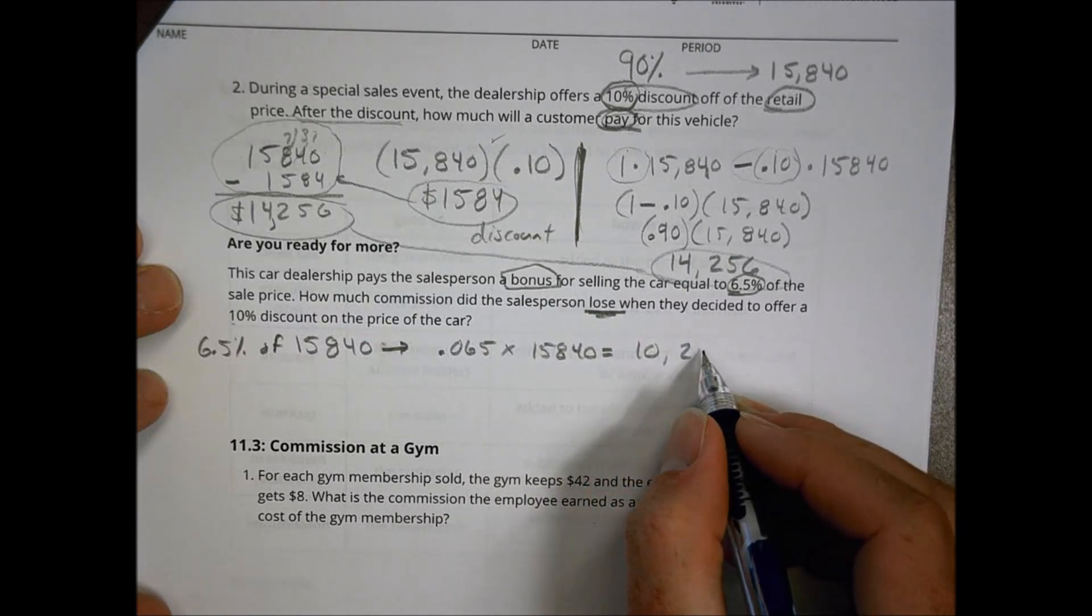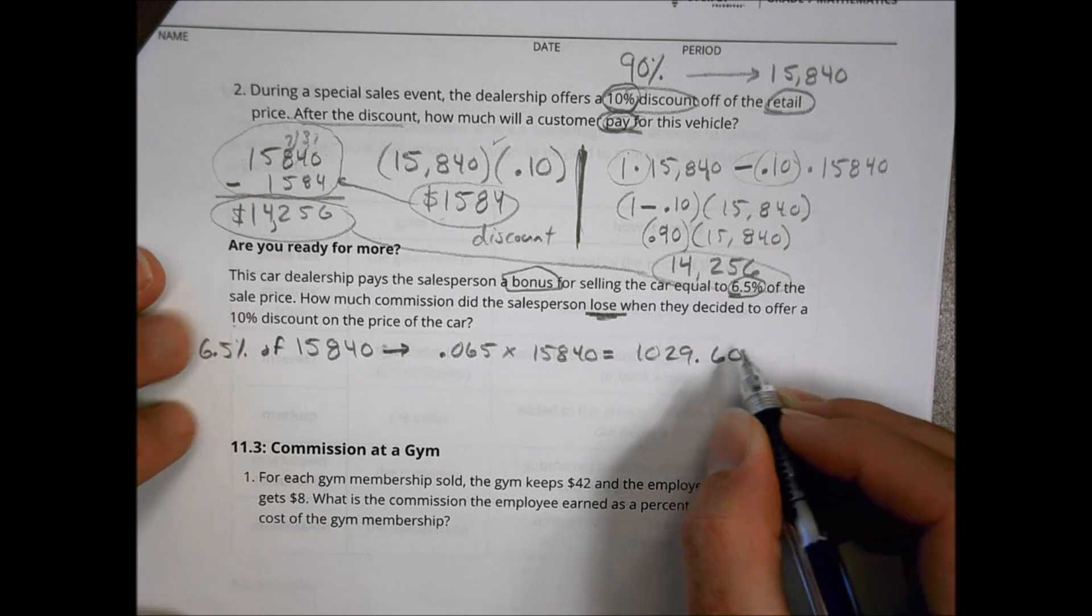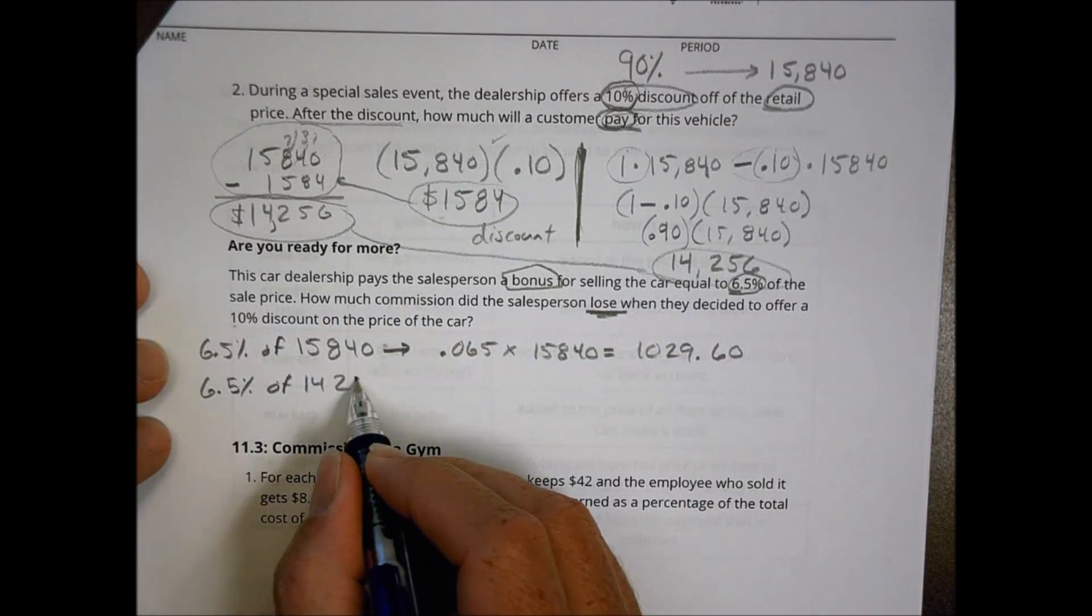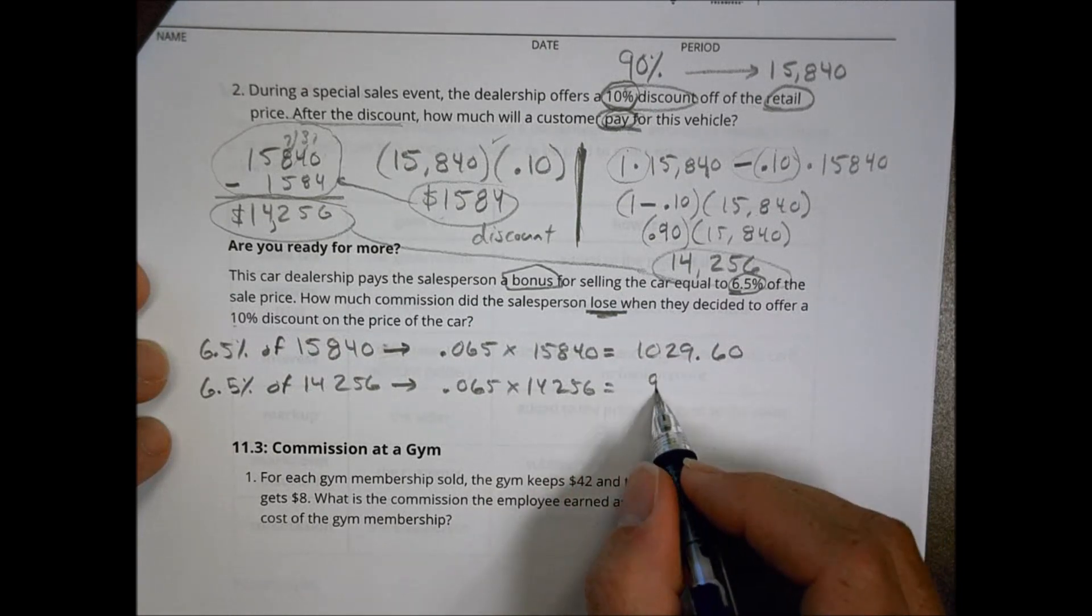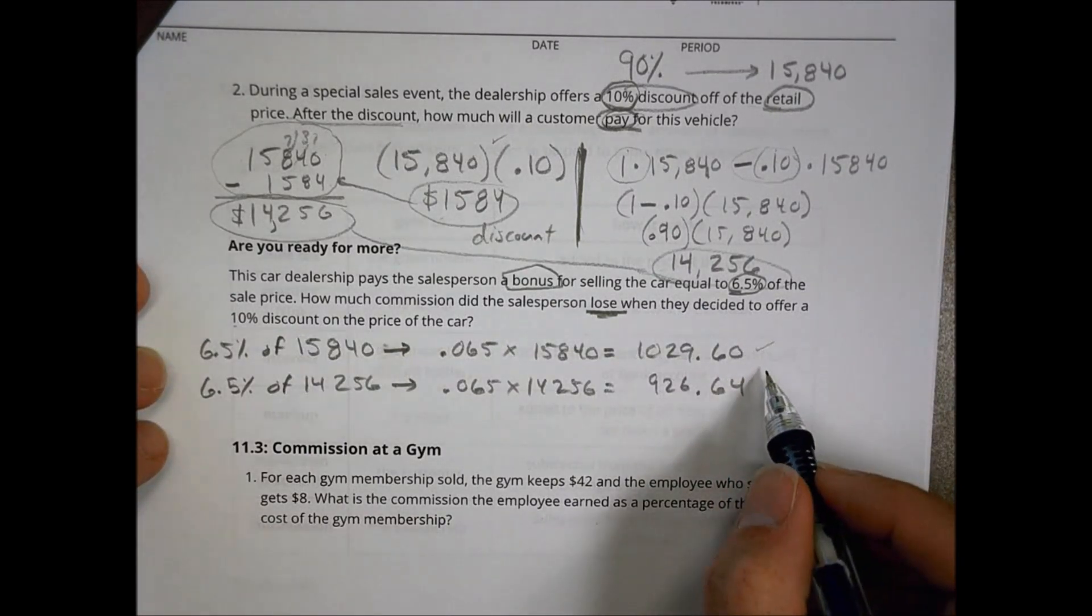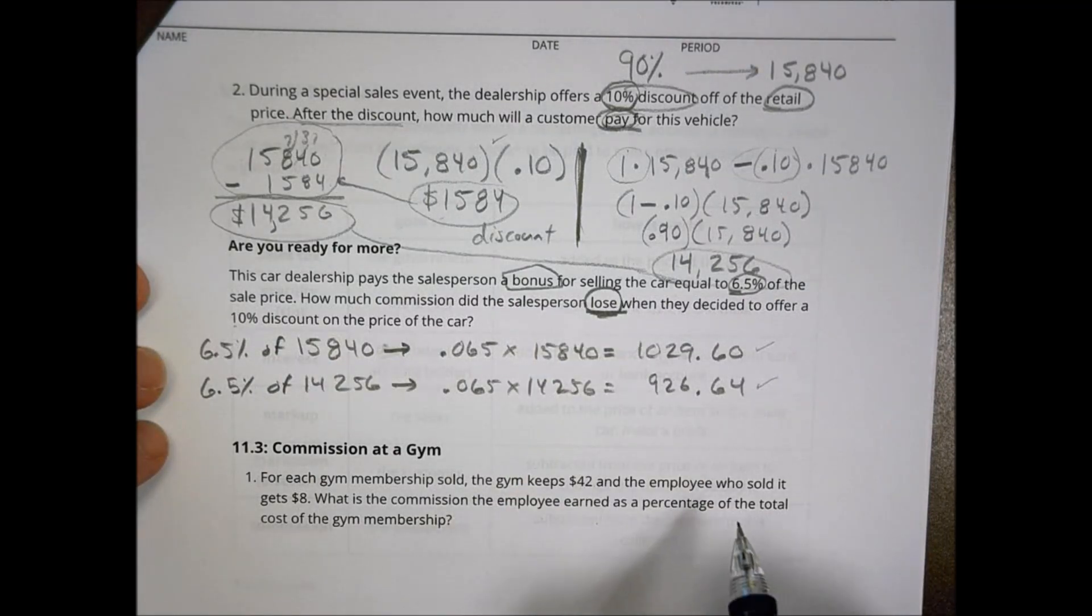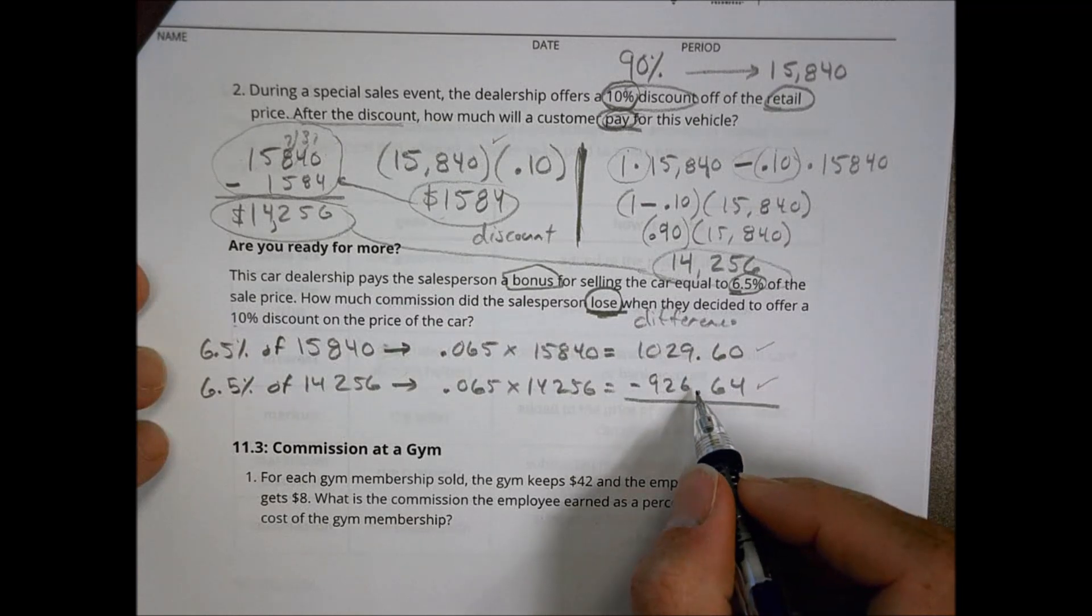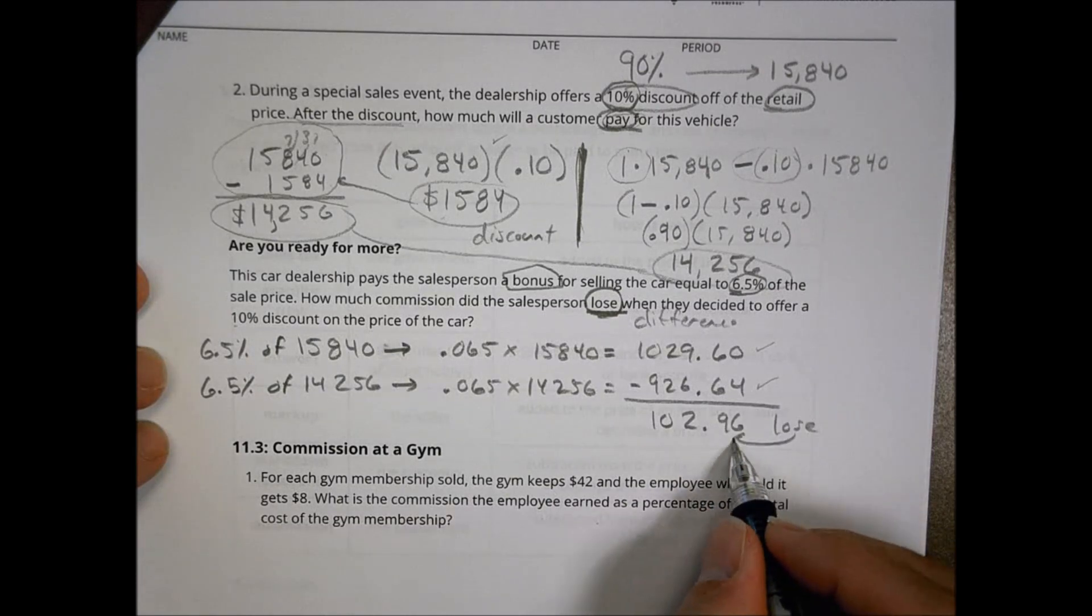When we multiply that out, you have $1,029.60. But if he only gets 6.5% of the sale price, which was 14,256, that becomes 0.065 times 14,256, which equals $926.64. So if he had did not give a discount, he would have made that much because he made the discount. He only gets that much, but the question wants to know is how much did they lose by giving the discount? That's going to be found by discovering the difference. So I would subtract what I could have made and what I did make and ended up with $102.96.